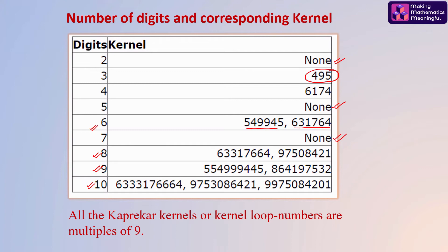There is a very important property you must have observed: all the kernel values are multiples of nine. And in the case of numbers having two digits, five digits, and seven digits, loops are formed, and the loop numbers are again multiples of nine.